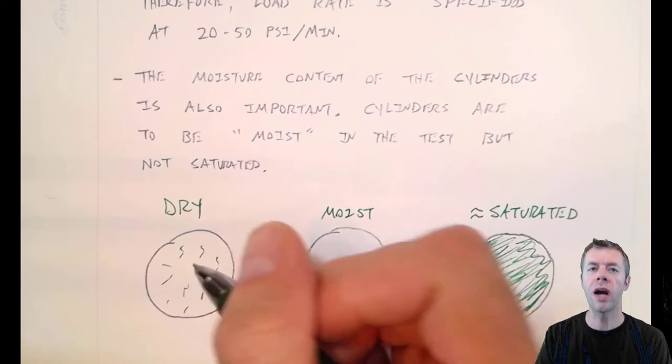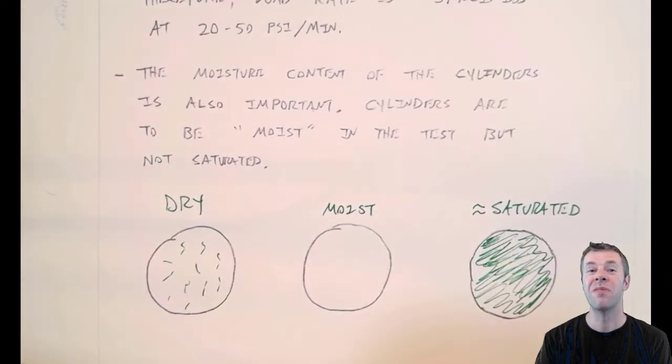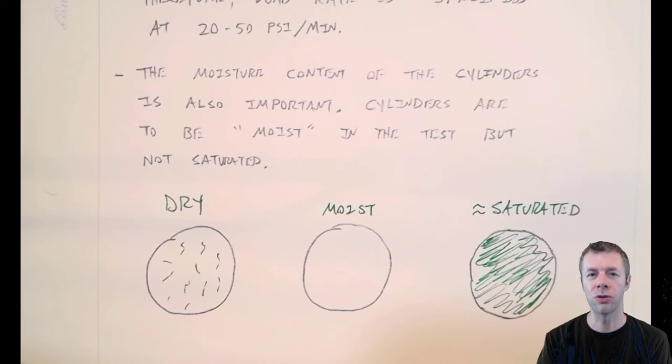Why would there be cracks? Well, when you dry a sample out, you get micro cracking. It loses water inside the pores. The concrete shrinks, causes damage.